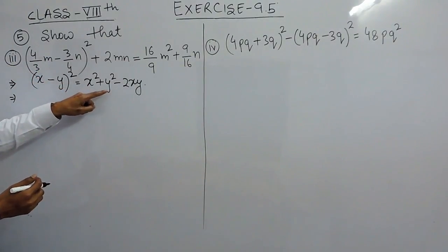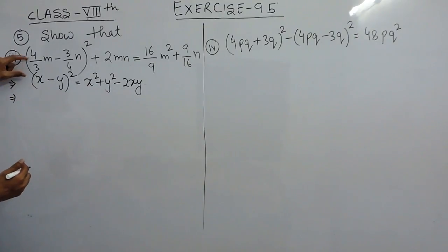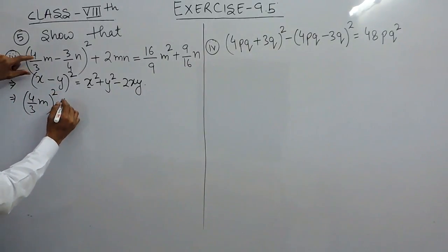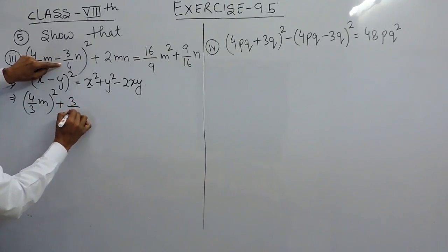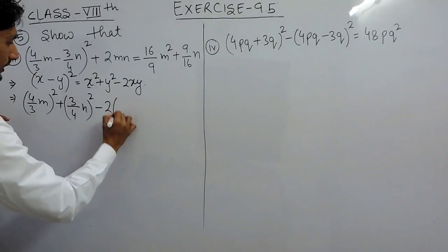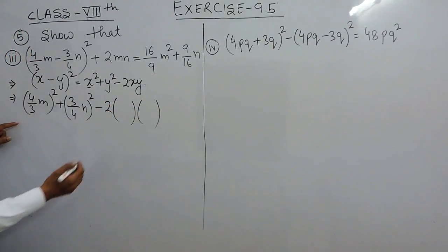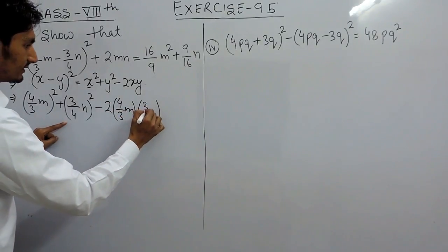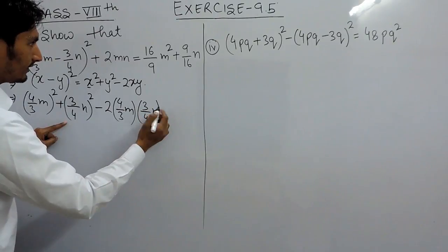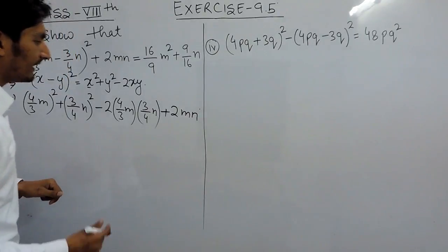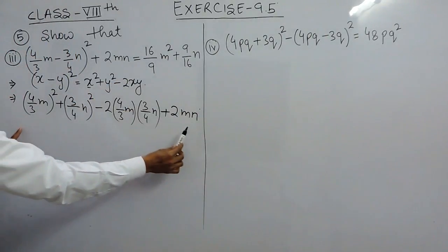x minus y whole square is equal to x square plus y square minus 2xy. Our x square, which is 4 upon 3m complete square, plus y which is 3 upon 4n complete square, and minus 2 into x into y — our x is 4 upon 3m and our y is 3 upon 4n — and the value plus 2mn will remain as it is. So I have expanded this term.